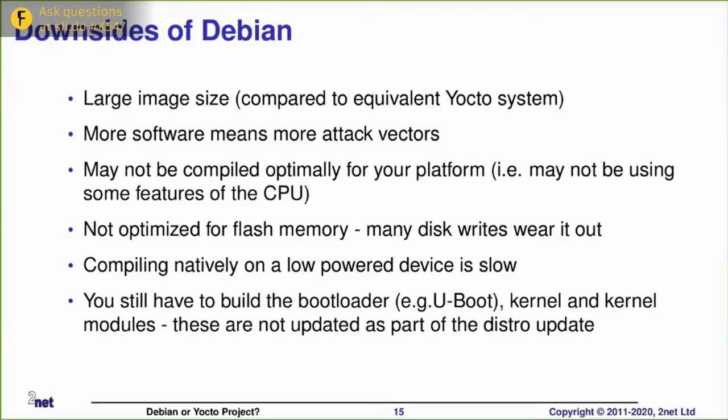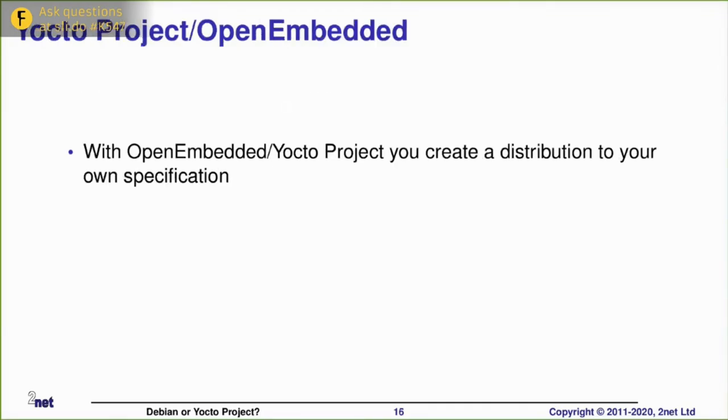Don't forget that the distros generally just cover the base operating system. You will probably still have to build the bootloader, whichever that may be, U-boot for example, and the kernel and the kernel modules. Depends on the distro. If you're using a distro such as Raspbian, that indeed will update the kernel and U-boot. But in general case, you'll have to add that in yourself. Okay, so that's the Debian side of the story.